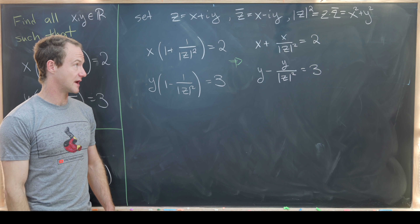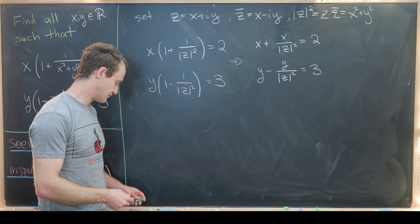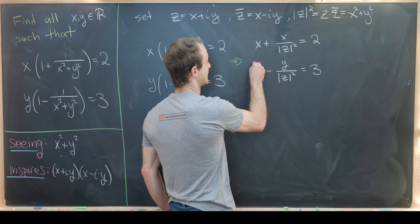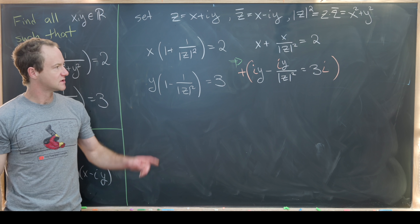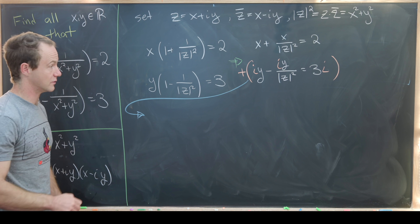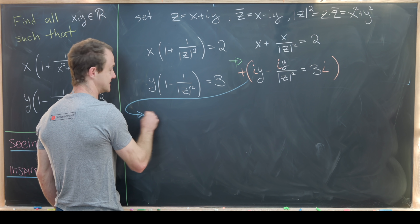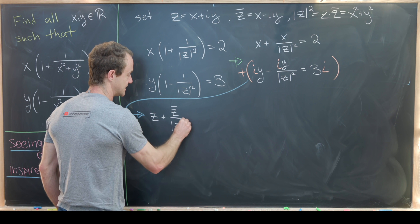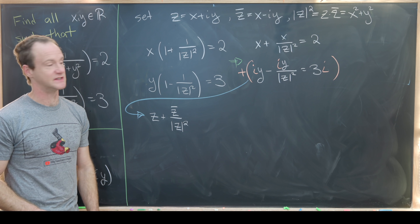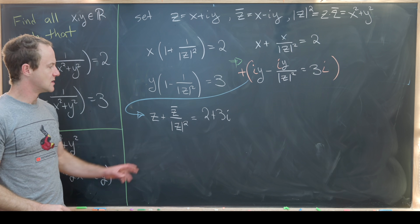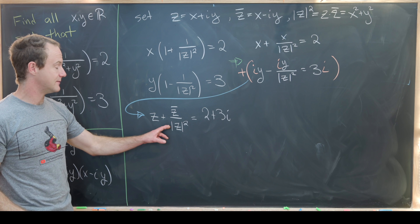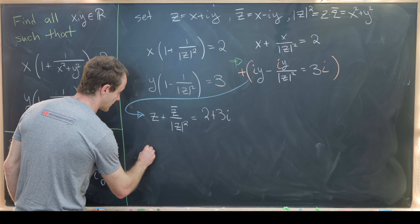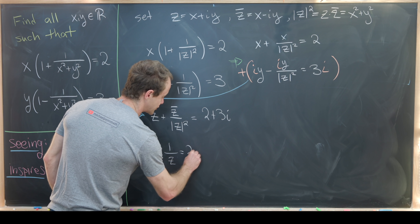We'd like this to depend only on the single complex variable z. So we'll multiply the second equation by i and add the two equations. That leaves us with x + iy, which is z, plus (x − iy) over |z|², which is z̄ over |z|². Since |z|² equals z·z̄, that cancels z̄ in the numerator, leaving z plus 1 over z equals 2 plus 3i.